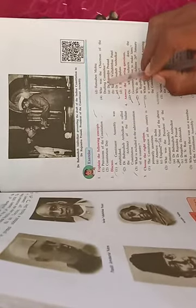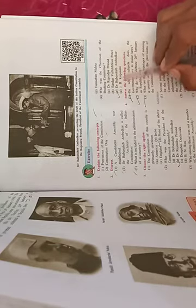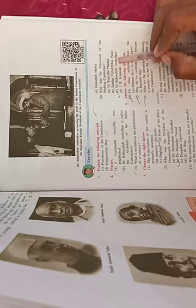Next: Who was the chairman of the drafting committee? Options: Dr. Rajendra Prasad, Sardar Vallabhbhai Patel, Dr. Babasaheb Ambedkar, and J.B. Kripalani. Dr. Babasaheb Ambedkar was the chairman of the drafting committee.